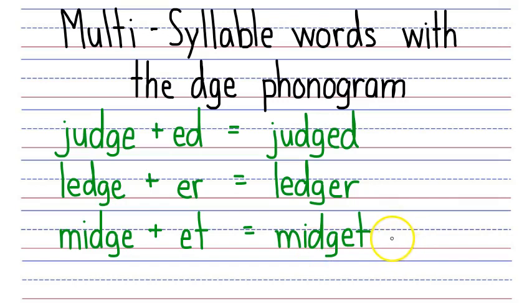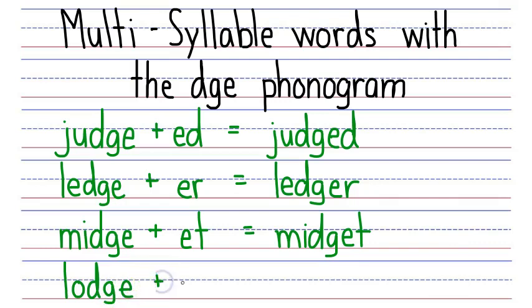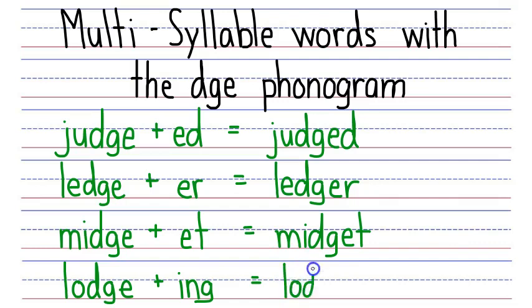Next, we're going to take the syllable lodge and add ING to make lodging. We have an L that says ul, an O that says ah, a DGE that says J, and we add ING. We just delete the silent final E and combine the two syllables: ul, ah, D, G to say J, and I, N, G to say ING — lodging.